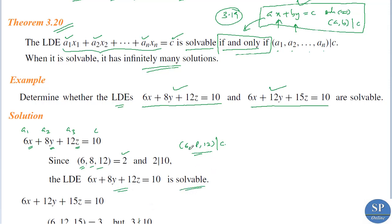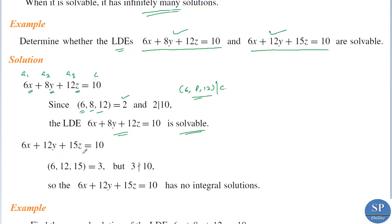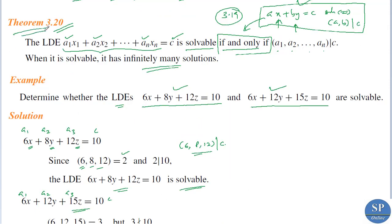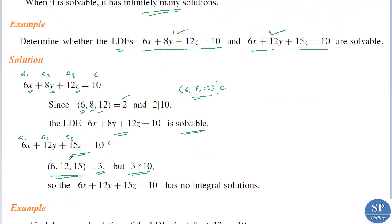For the second LDE, 6x plus 12y plus 15z equal to 10, we have a1 equal to 6, a2 equal to 12, a3 equal to 15 and c equal to 10. The GCD of 6, 12 and 15 is 3, but 3 does not divide 10. So it violates the condition in Theorem 3.20, and therefore this LDE is not solvable — it has no integral solution.